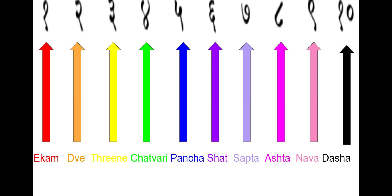So you see the first one that says Akam — it's red, and so is the arrow which is pointing to one. That way you can figure out which word matches which number.